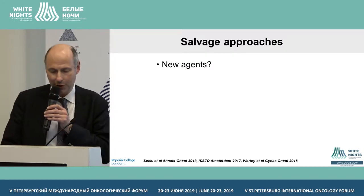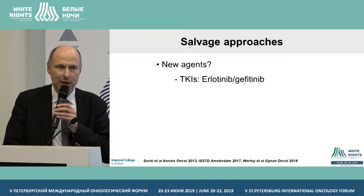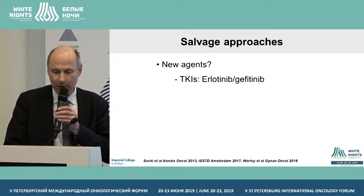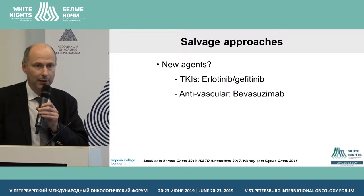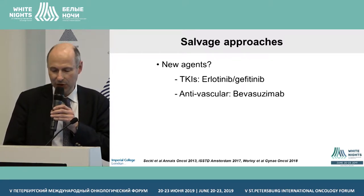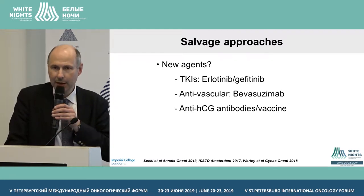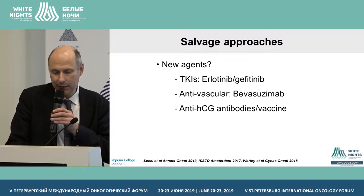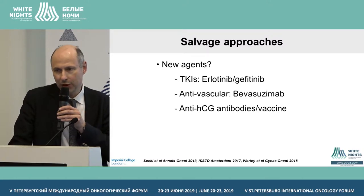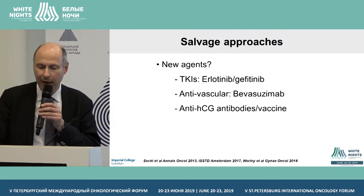What about new agents? These tumours express the epidermal growth factor receptor, but we've never demonstrated mutations in these receptors - unlike lung cancer. We treated several patients with erlotinib or gefitinib and saw no responses. These are very vascular tumours, so bevacizumab might seem useful, but we've tried it in a couple of patients and seen no response. They make HCG, so why not try an anti-HCG-based therapy or vaccine? Ken Bagshaw once successfully treated one multi-drug-resistant patient with a radiolabelled HCG antibody, but we no longer have access to this therapy.